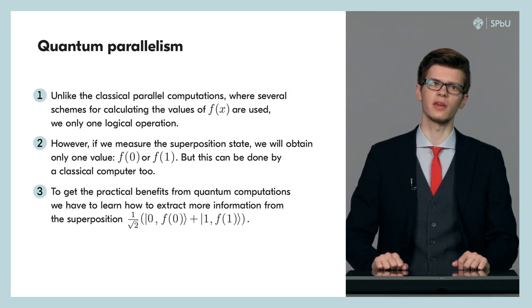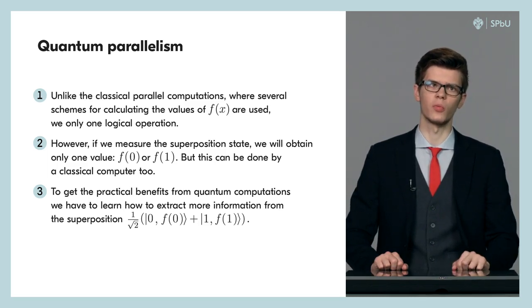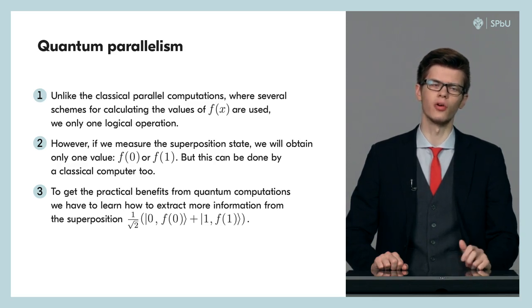We note that if we perform a measurement of the state, we will only obtain one of the values in a superposition we got. In our example, this can be the value f(1) or f(0). After that, one has to perform the whole procedure again. And that's why for calculating the values of f, this procedure is of no practical benefit. The thing is, the classical computer also can do such operations and do them more effectively.